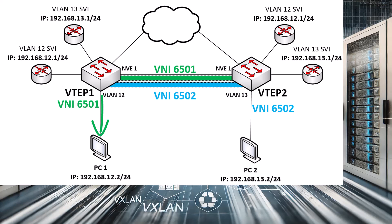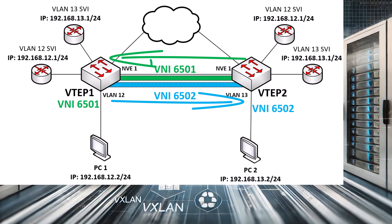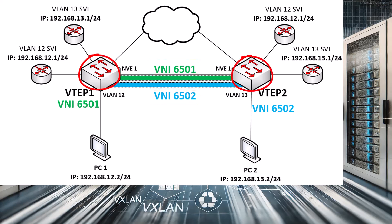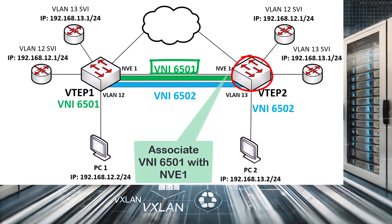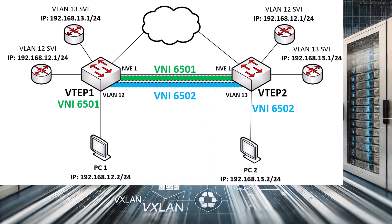So why is this called asymmetric IRB? Because the return traffic uses a different VNI than the source traffic. This requires that both the source and destination VNIs be associated with both the ingress and egress VTEPs. So even if you don't have any end devices on VTEP2 that belong to VNI 6501, you still have to create an SVI on VTEP2 to handle the routing to VNI 6501. More broadly, every VTEP must be associated with every VNI on your VXLAN topology to which you would like Layer 3 communication, even if you don't have any end devices on that VNI locally. You can easily see how this can be cumbersome to configure and is not scalable.